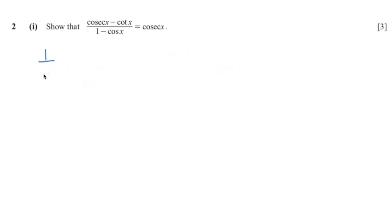This question involves the trigonometric identities. We know that cosecant equals 1 over sin x minus cotangent, which is basically cos x over sin x.